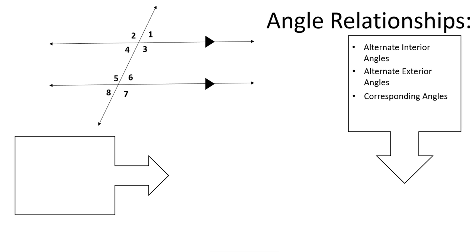Next, I have corresponding angles, and for some reason this angle relationship is one of the hardest ones for students to grasp. Corresponding angles are on the same position along the transversal and at the same location at each intersection. The pairs are: 2 and 5, 4 and 8, 1 and 6, and 3 and 7.